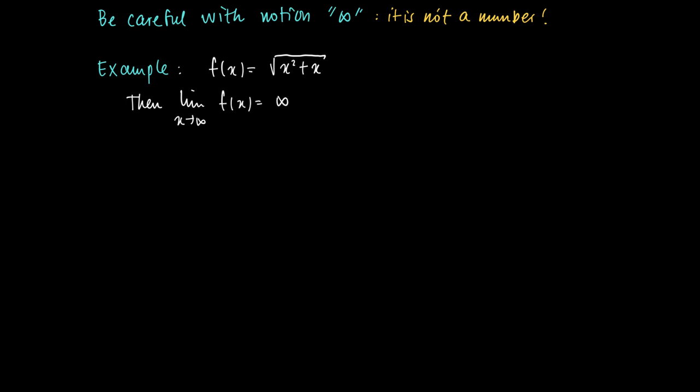At least we see that the limit of x to infinity of f(x) equals infinity. The values of f(x) become arbitrarily large, and the same holds for g of x. So the limit of x to infinity of g(x) equals infinity.